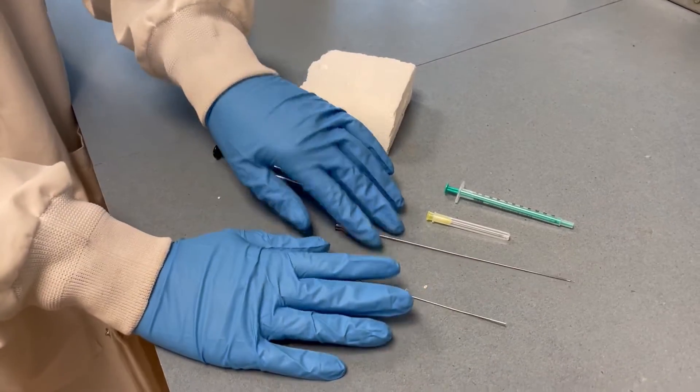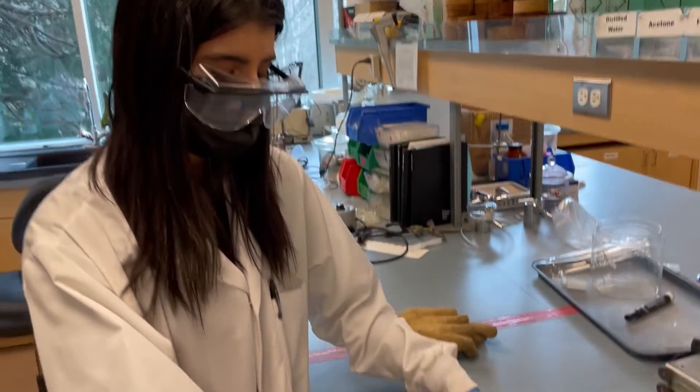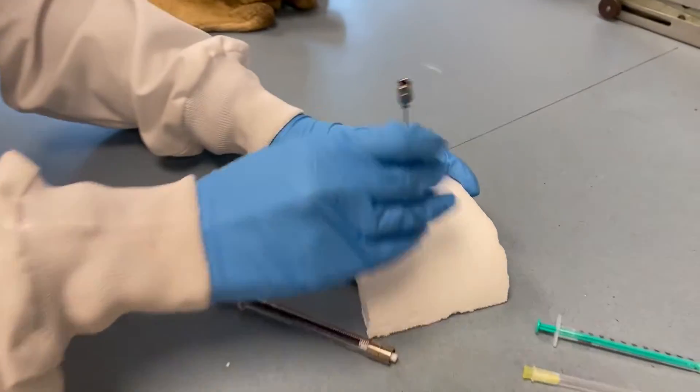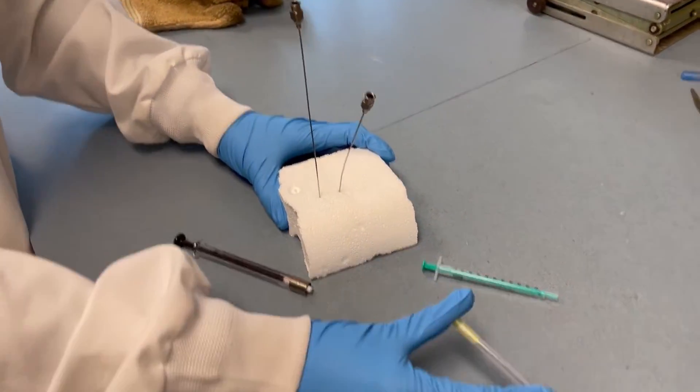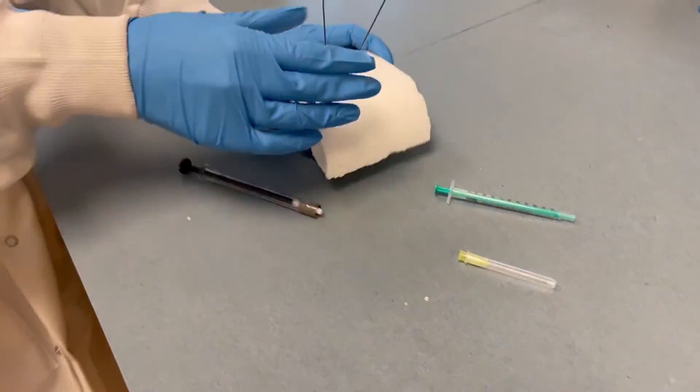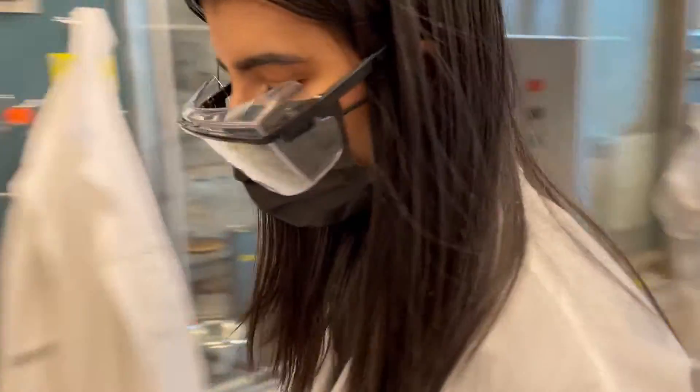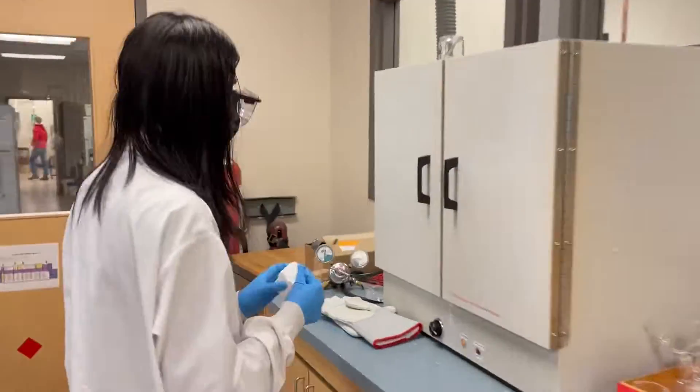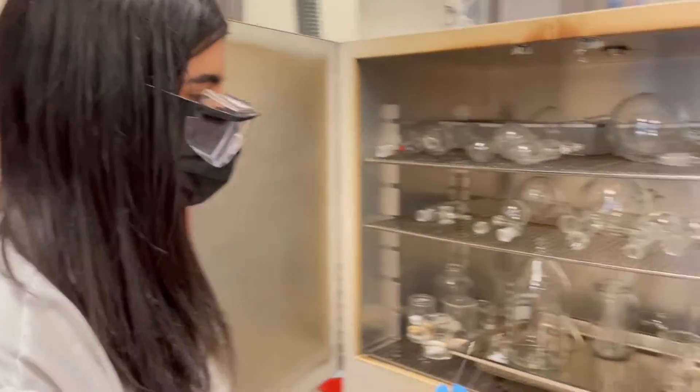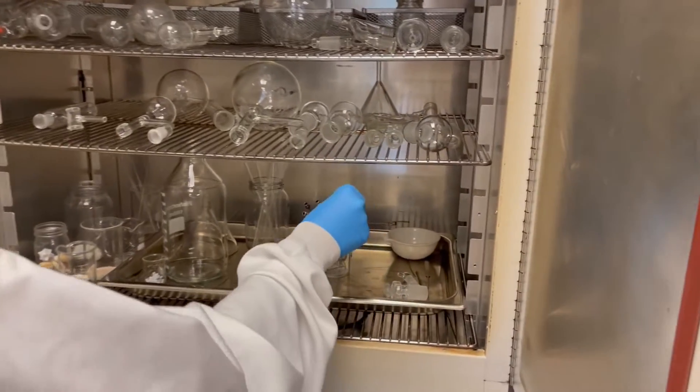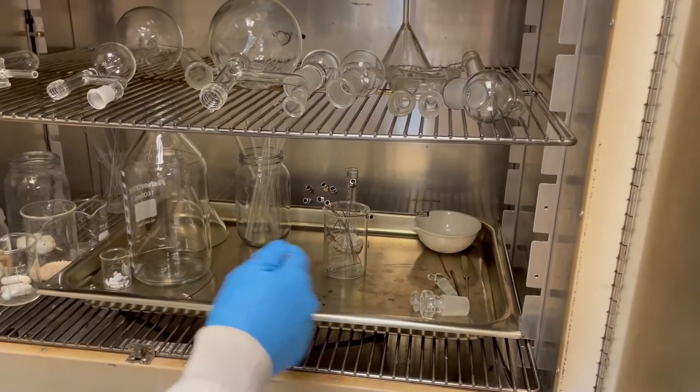If you're going to store needles outside of the oven, you want to place them in a styrofoam block so they can go in there. These ones can just be disposed of after use. To store these in the oven, they should be taped needle down in a beaker to prevent anyone from poking their hands.